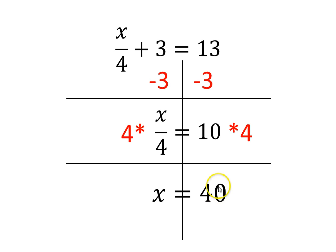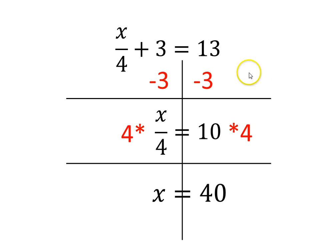So x equals 40 on the right-hand side because 10 times 4 equals 40. We can verify: 40 divided by 4 is 10, and 10 plus 3 is 13. So the value of x in this equation is 40, and we're done.